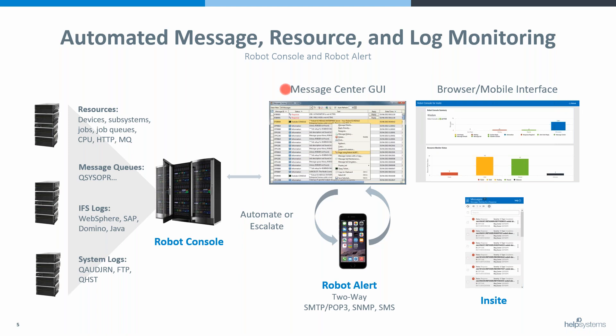Message centers are where you can get a view of everything that's going on, and you can do automatic escalation or automate message processes through the center. With escalation you can use Robot Alert — Robot Alert is our alerting module that works with Console, Network Schedule, and any of our other processes.